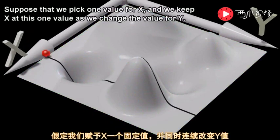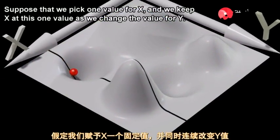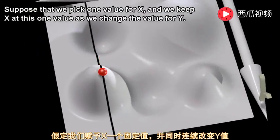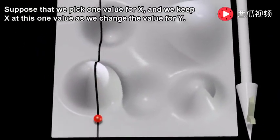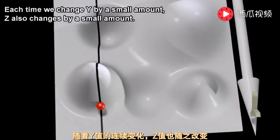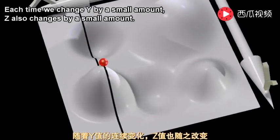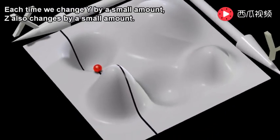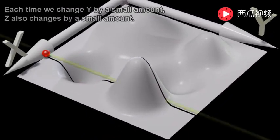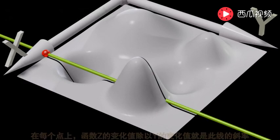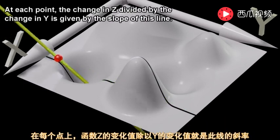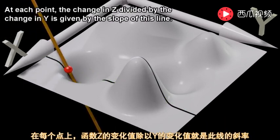Suppose that we pick one value for x and we keep x at this one value as we change the value for y. Each time we change y by a small amount, z also changes by a small amount. At each point, the change in z divided by the change in y is given by the slope of this line.